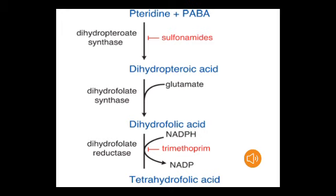Sulfonamides and trimethoprim cause sequential blockade: sulfonamides inhibit the first step in this pathway. Being structurally similar to para-aminobenzoic acid, sulfonamides competitively inhibit the union of pteridine and para-aminobenzoic acid.